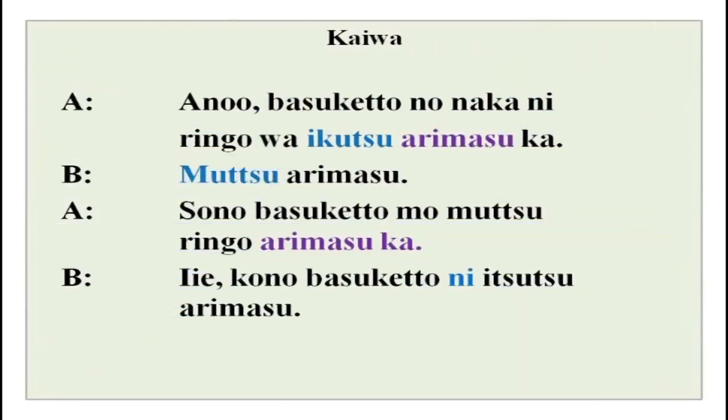Listen to this small radio conversation: ano basket no naka ni ringo wa ikutsu arimasu ka? Mutsu arimasu. Sono basket mo mutsu ringo arimasu ka? Iie, hono basket ni hitotsu arimasu. This tells you about numbers — how many things are present in a certain place.